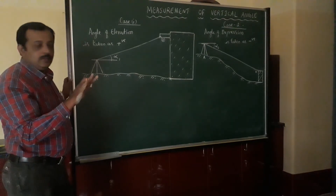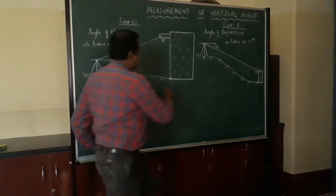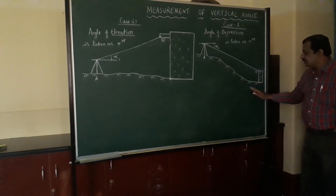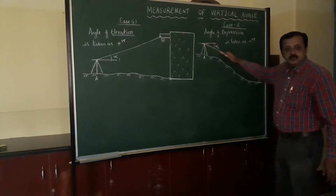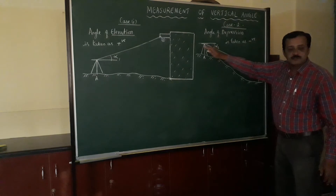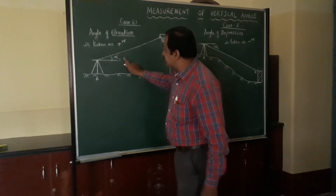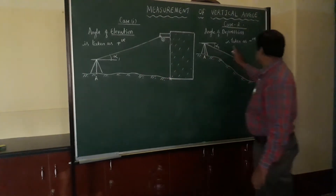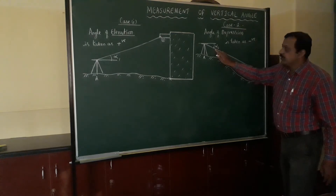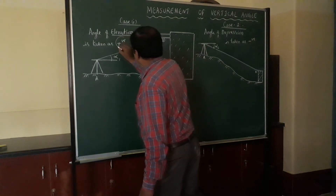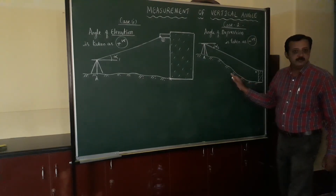Sometimes the object may be above the ground — elevated above the ground — and this we call the angle of elevation. Sometimes the ground profile is such that the object is below, and the line of sight goes below the horizontal axis. When the line of sight is above the horizontal axis, that angle is called angle of elevation and is taken as positive. When the object is below the horizontal axis, we call it angle of depression and take it as negative.